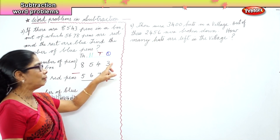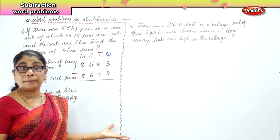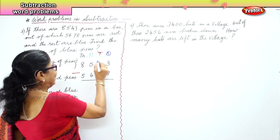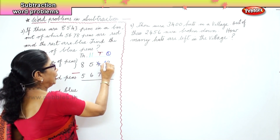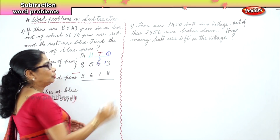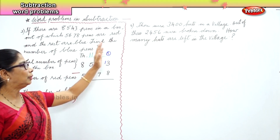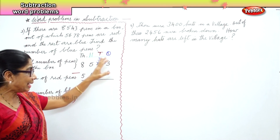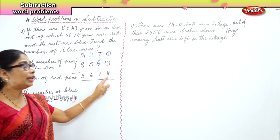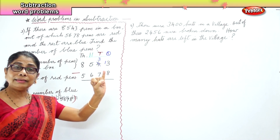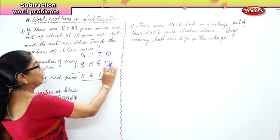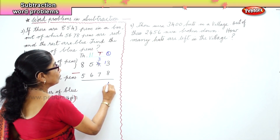Look at the ones place — you have three ones and eight ones. Eight is bigger, you cannot subtract. We borrow one from the tens, so four becomes three. When you bring one ten to the ones place, you have ten plus three — thirteen. From thirteen ones, take away eight: after eight, nine, ten, eleven, twelve, thirteen — so thirteen take away eight is five.